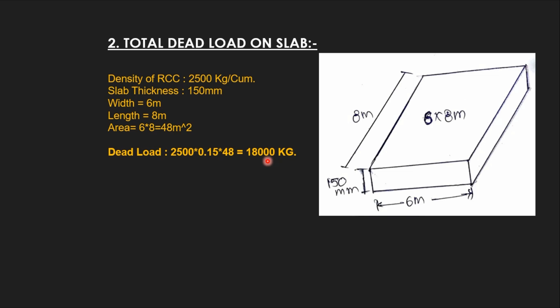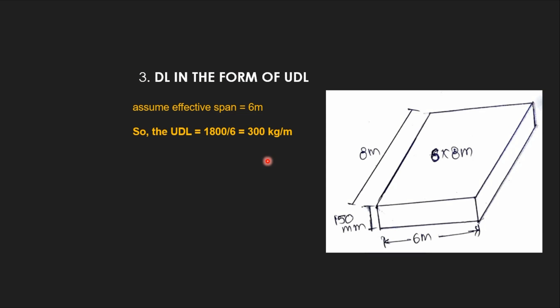Generally, we calculate the dead load in the form of UDL to find out the bending moment. So to calculate the dead load in the form of UDL, we must know the effective span of the slab.